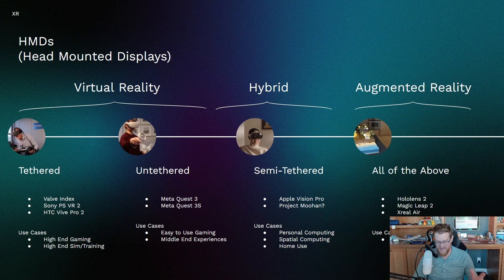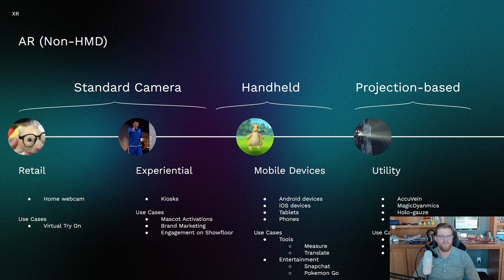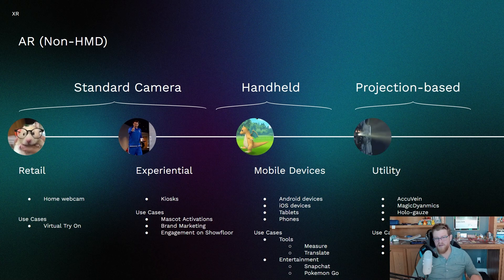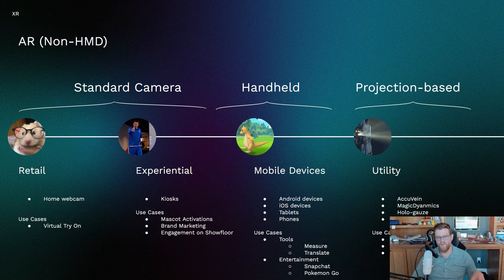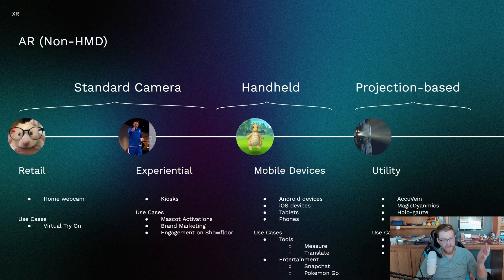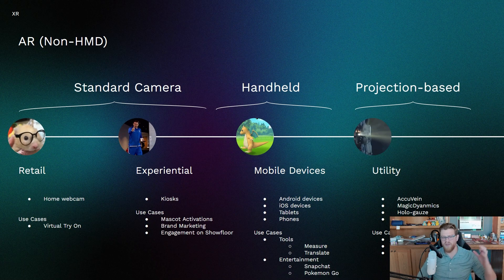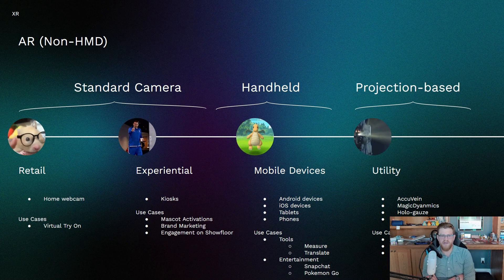A lot of these lean into that innovation use case. Moving to augmented reality non-head-mounted displays — typically you're going to see things like standard cameras. In the retail space, you have your home webcam where you can do things like virtual try-on. I literally bought the pair of glasses I'm wearing through a virtual try-on website using my webcam that showed me what the glasses would look like before I had to buy them. Or you'll see it using standard cameras in the experiential space.